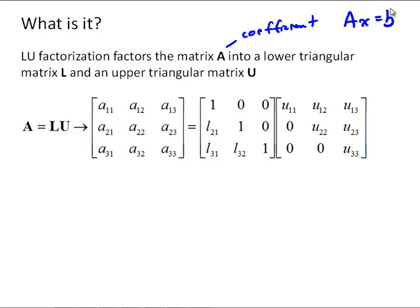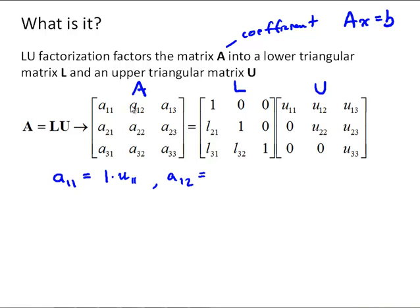Before we talk about why it's useful, let's go through how that works. Here we have a matrix A expressed as a product of L times U. Just by implementing the definition of matrix multiplication, we can say A11 is equal to 1 times U11, and then we see zeros as we go down the rest of that column. So A12 is equal to U12.